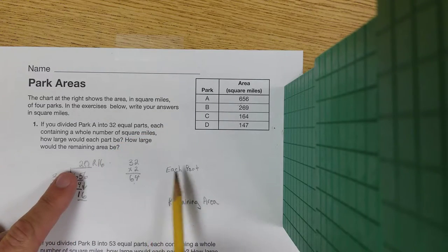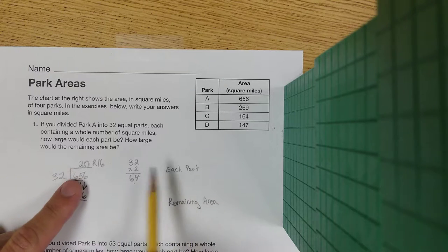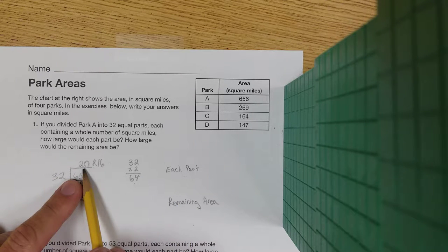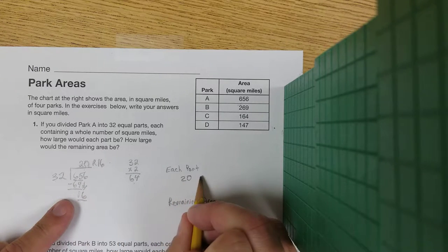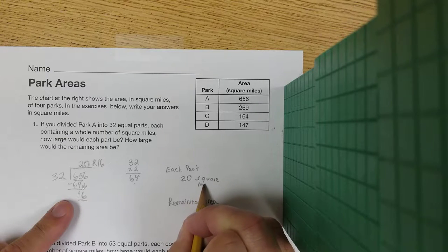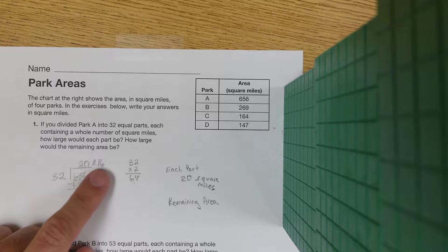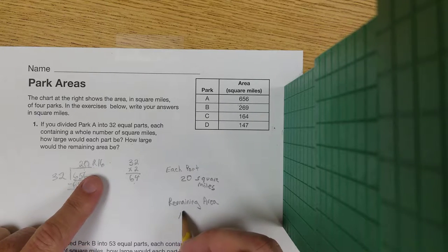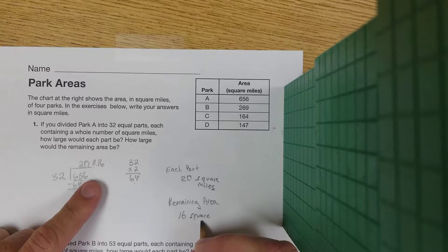Now how we do this in a word problem is we have to label it. So each part is going to be 20 square miles, so we have to write 20 square miles. And then what is our remainder? Our remainder is 16 square miles.